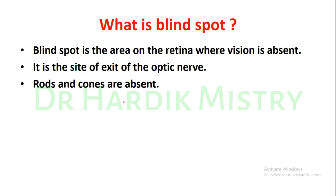What is blind spot? Blind spot is the area on the retina where vision is absent. Why? Because it is the site of exit of the optic nerve from the retina. But why is there absence of vision? Because at this specific point where the optic nerve leaves the retina, there is absence of rods and cones.